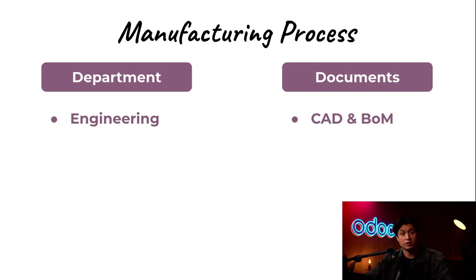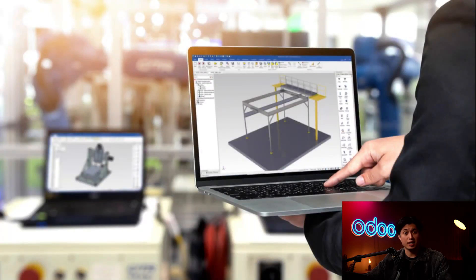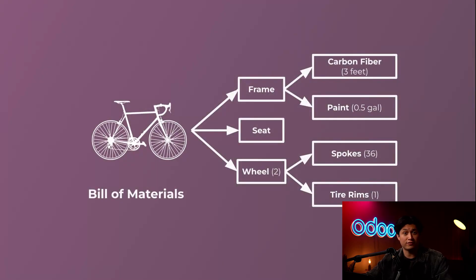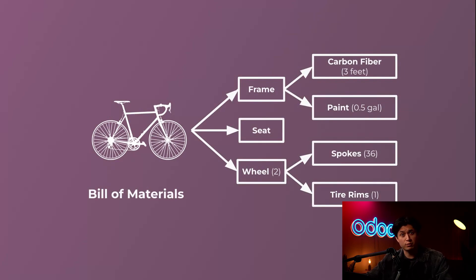In most manufacturing workflows, the process starts with engineering. Engineers are responsible for designing the product, typically using computer-aided design software, or CAD for short, such as AutoCAD or SolidWorks. Once the design is finalized, the next step is to create a Bill of Materials in Odoo — more commonly called a BOM.